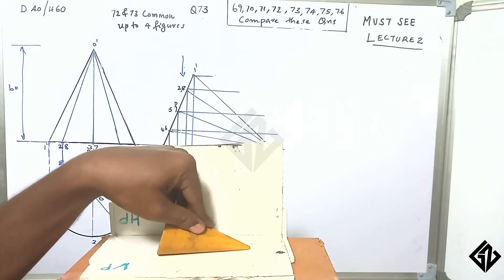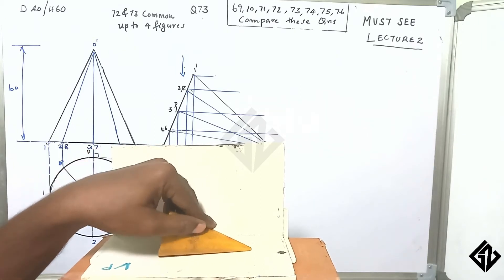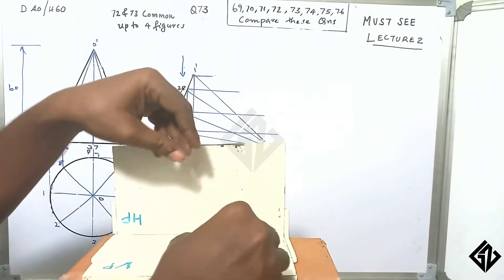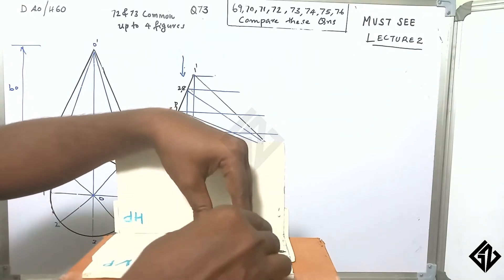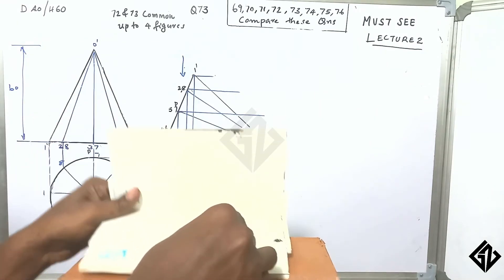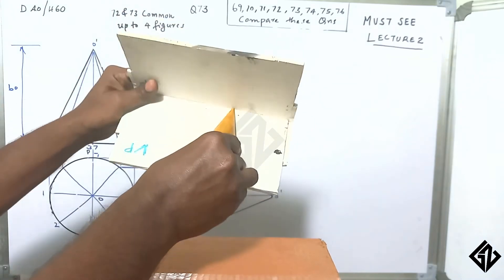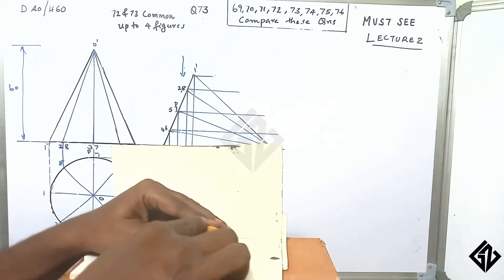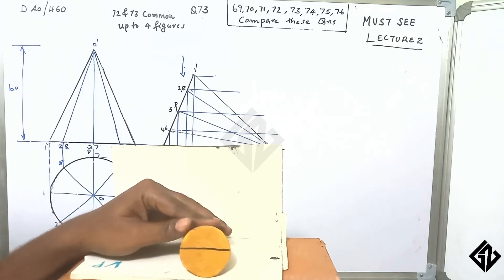The vertical plane passing through the axis is inclined perpendicular to both HP and VP. That is, the cone's axis is lying on the profile plane and the apex is touching VP. Because VP is touching the apex. The base is also visible on the front view. Here is question number 73.